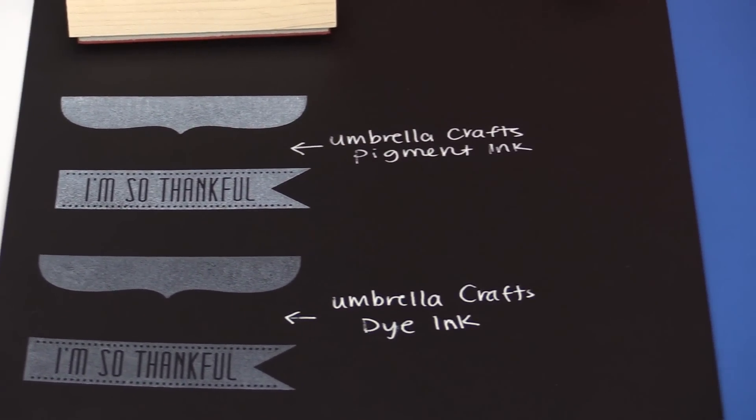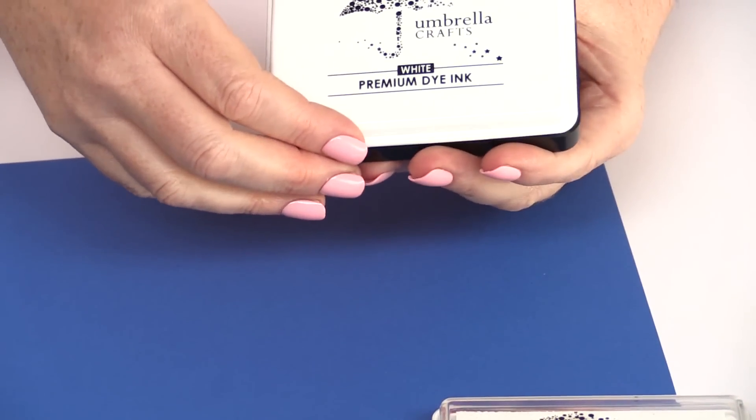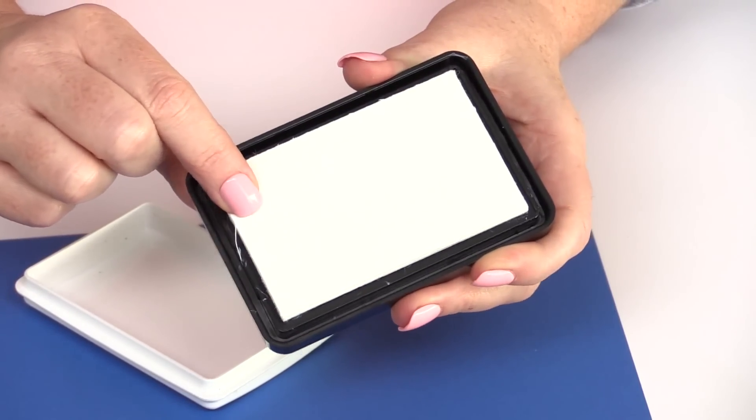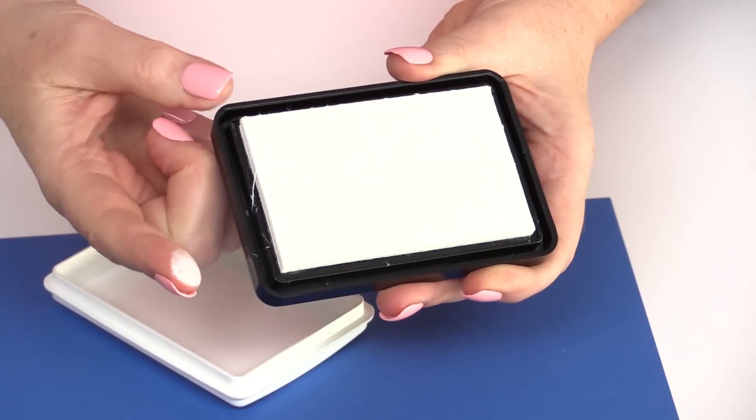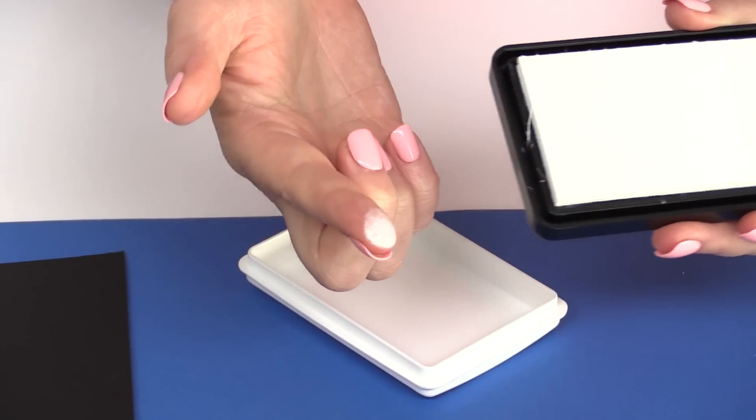I'm going to show you the difference between the two pads and how they ink up stamps. Here is the premium dye ink. You can see that the pad is a fabric pad, and when you touch it, it sort of sinks into your finger a little bit.